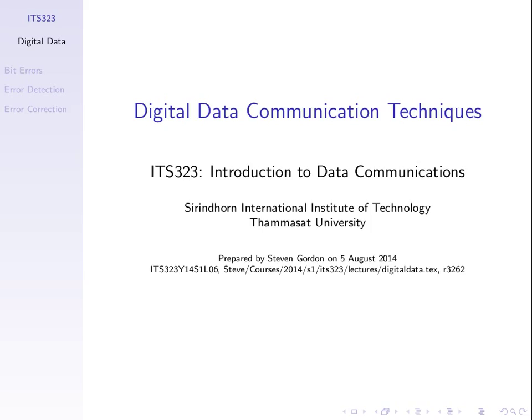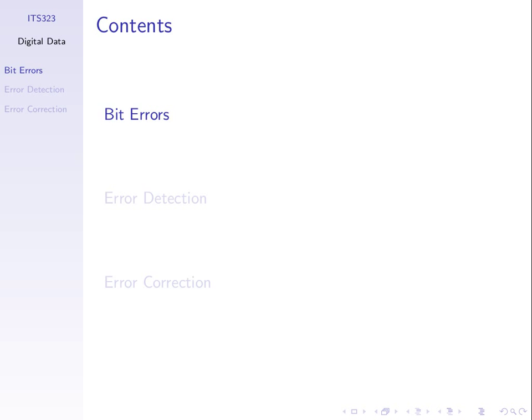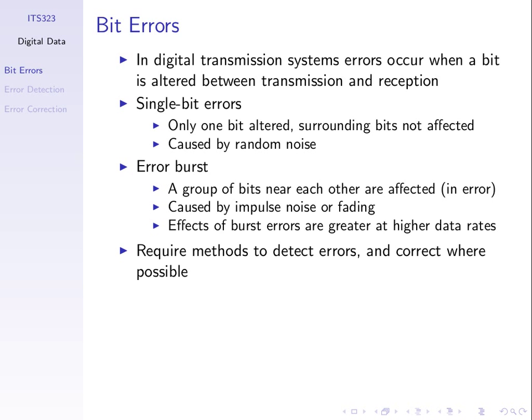From now on we'll assume we can have bit errors. When we send a sequence of bits, sometimes some bits received may be different from what was sent. Usually it's random — we cannot predict which bits. It's due to noise or problems in the communication system. We need methods to detect those errors and, when possible, correct them so we get the original data. Sometimes bit errors occur one at a time; in worst cases, I send 1,000 bits and 100 in a row are in error — a burst of errors due to some significant problem.